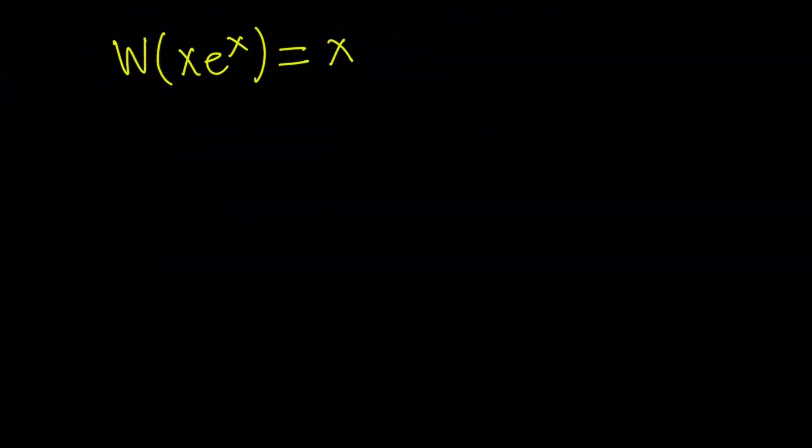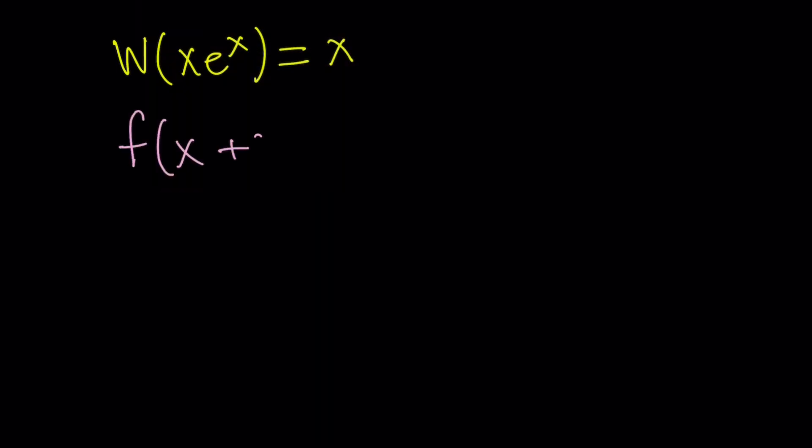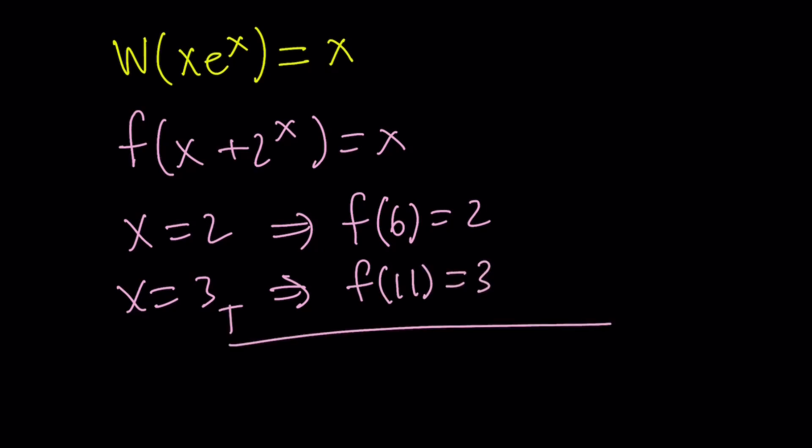Anyways, here's what we're going to do one more time. We have the function f(x + 2^x) = x. By replacing x with 2, we're going to find f(6) = 2. By replacing x with 3 on both sides, we're going to find f(11) = 3. And then we're going to add these up to find f(6) + f(11), and that's going to be 5.